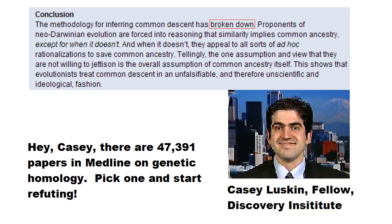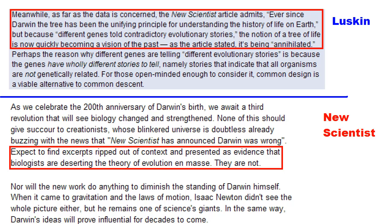Luskin wrote: "Proponents of neo-Darwinian evolution are forced into reasoning that similarity implies common ancestry, except for when it doesn't. And when it doesn't, they appeal to all sorts of ad hoc rationalizations to save common ancestry." He then goes on to quote mine an article in The New Scientist, but omits the editor's note which states: "None of this should give succor to creationists whose blinkered universe is doubtless already buzzing with the news that New Scientist has announced Darwin is wrong. Expect to find excerpts ripped out of context and presented as evidence that biologists are deserting the theory of evolution en masse. They are not." The editors of The New Scientist must be psychic.